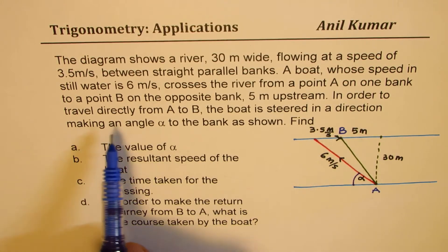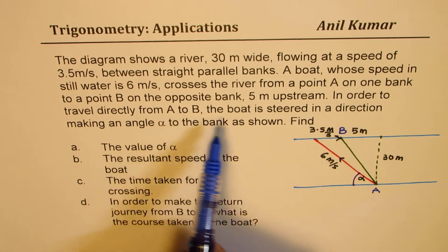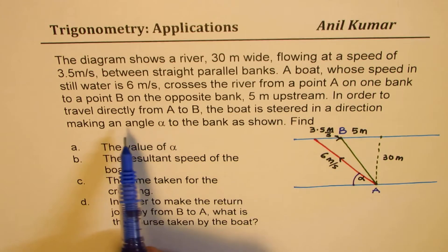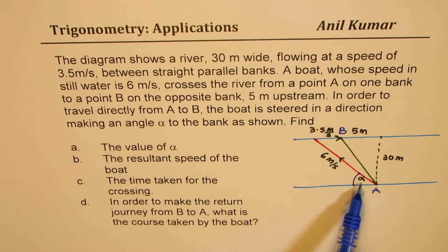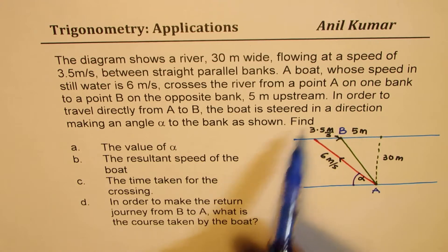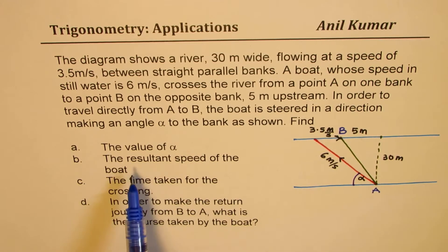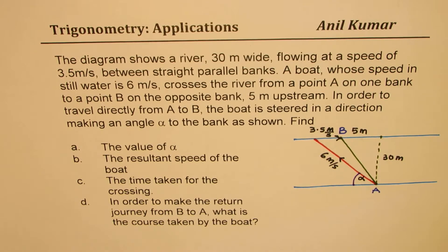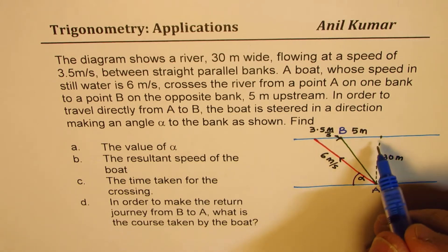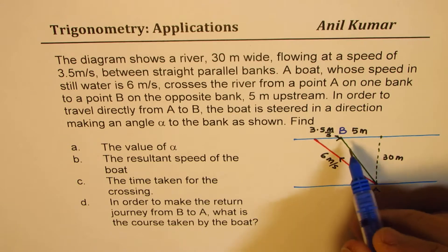In order to travel directly from A to B, the boat is steered in a direction making an angle alpha to the bank as shown. Find the value of alpha, the resultant speed of the boat, and the time taken for the crossing. Also, in order to make the return journey from B to A, what is the course taken by the boat? Excellent question — now let's see how to solve it.